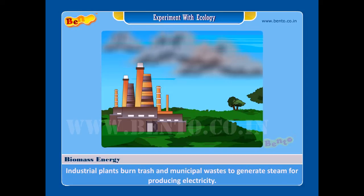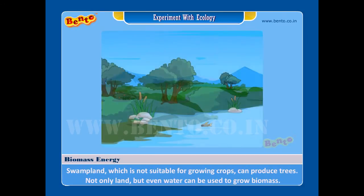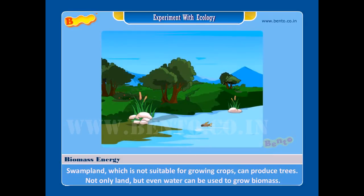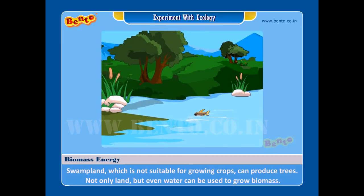Industrial plants burn trash and municipal waste to generate steam for producing electricity. Swampland, which is not suitable for growing crops, can produce trees. Not only land, but even water can be used to grow biomass.